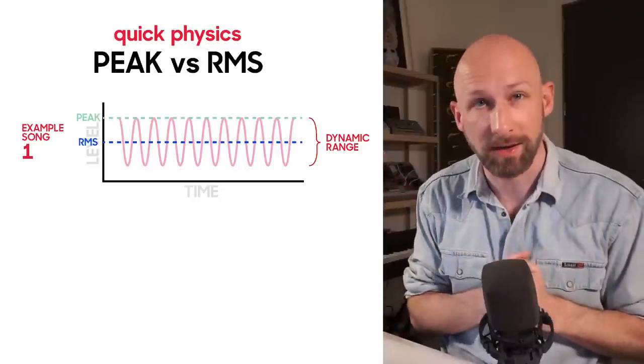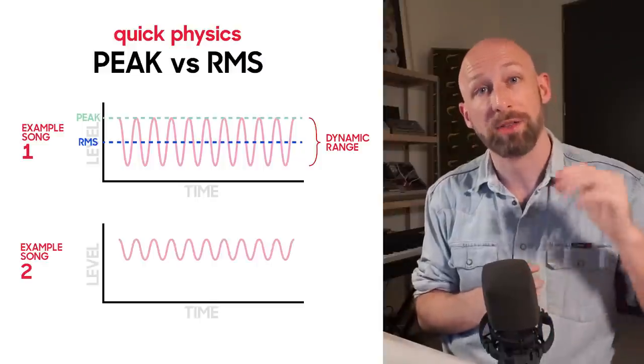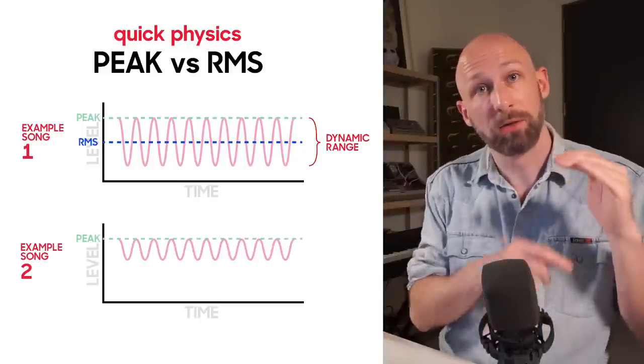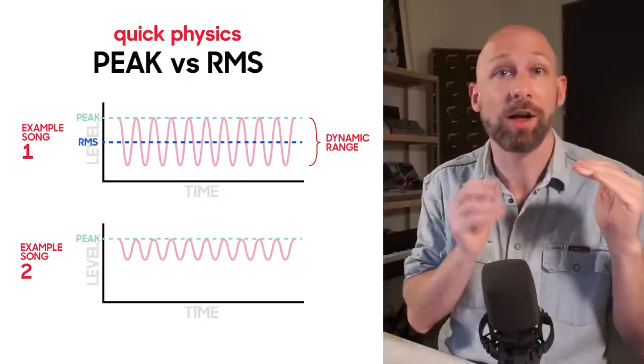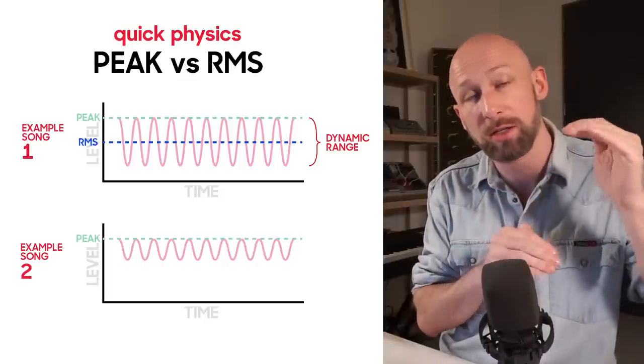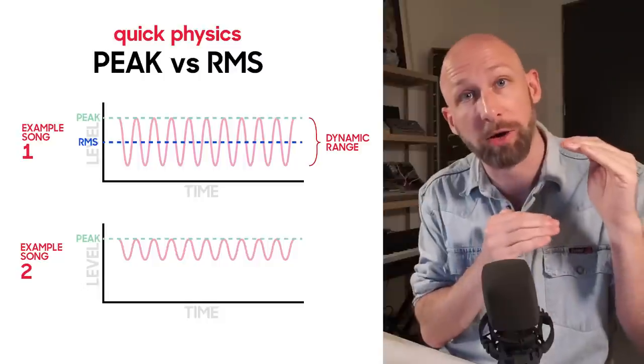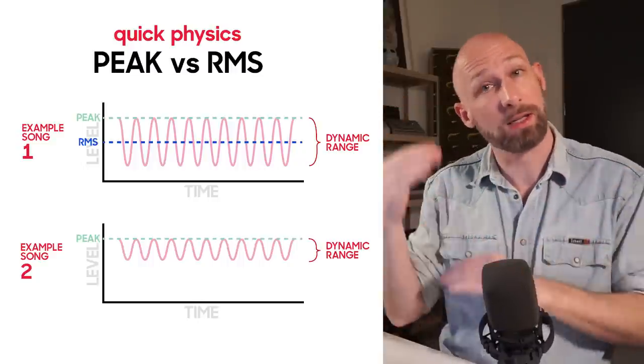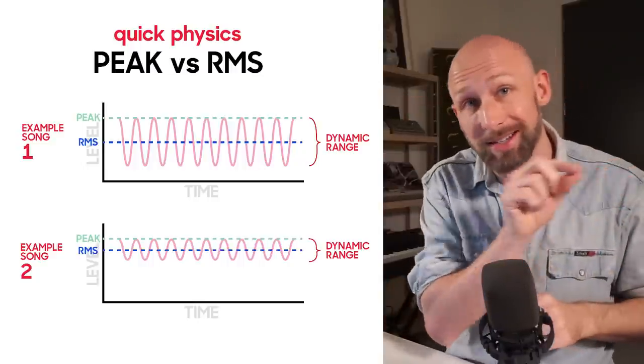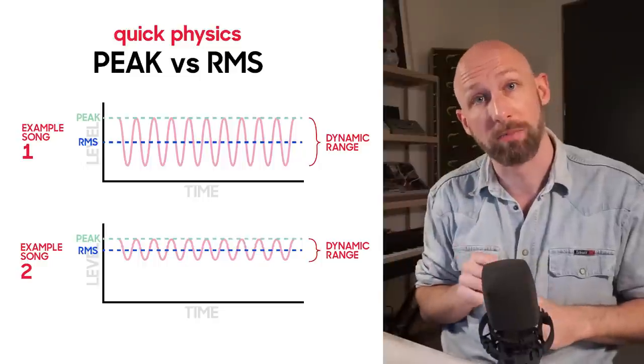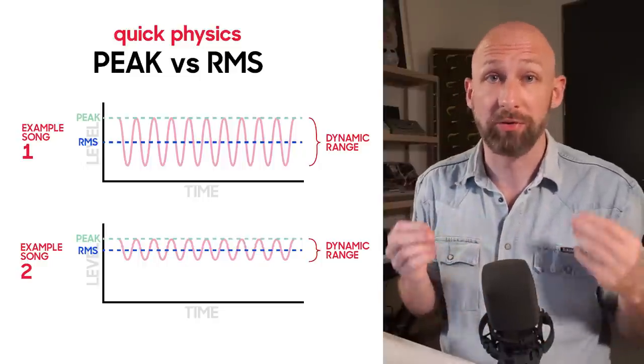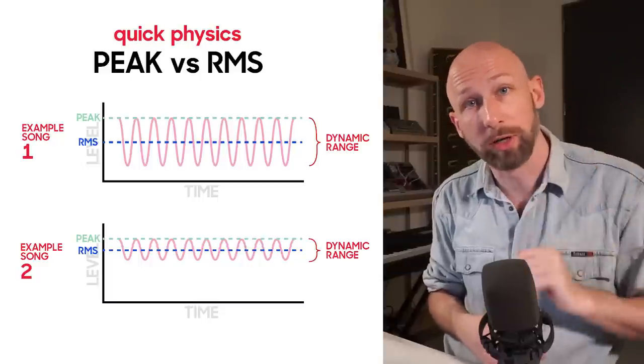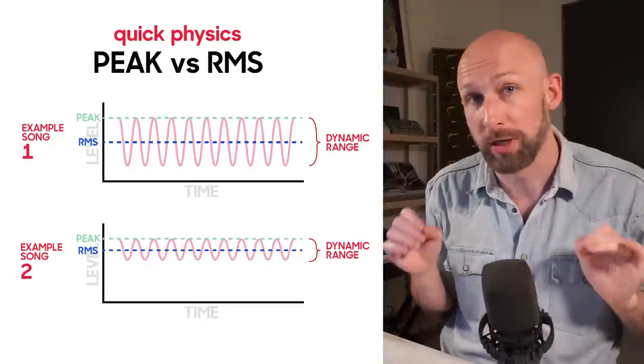So let's consider a second example. Here's another song that peaks at the same volume as the previous song. However, when this signal reaches its most quiet part, it's not as quiet as the first song. So the distance between the loudest and the quietest parts is much shorter. It has a smaller dynamic range. It's less dynamic, more compressed, and its RMS is higher than the first track's RMS was. This is closer to what a professionally mastered track probably looks like. So the first track will look a bit more like your work in progress, and the second track will look more like a professionally released track that's probably a bit more compressed than yours.